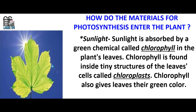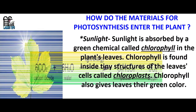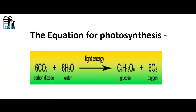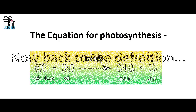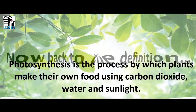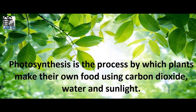Chlorophyll also gives leaves their green color. Now, back to the definition: photosynthesis is the process by which plants make their own food using carbon dioxide, water, and sunlight.